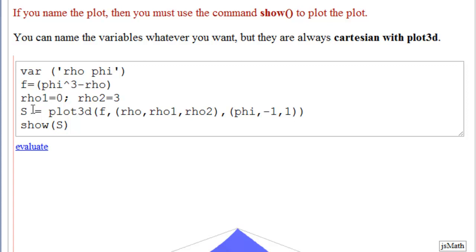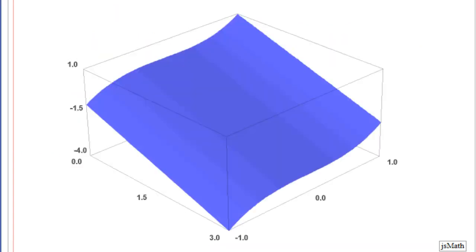And here we've actually written rho 1 to be 0 and rho 2 to be 3. And here's s, or naming our plot, equal to plot 3d. F, there's our function. And then rho is our first variable. So, it will be on the left axis. Rho 1 to rho 2 is our range. And then phi from minus 1 to 1. If we just stopped here and did evaluate, it would evaluate it fine, but it would not plot it. We must say show s and then evaluate. And we get exactly the same plot.